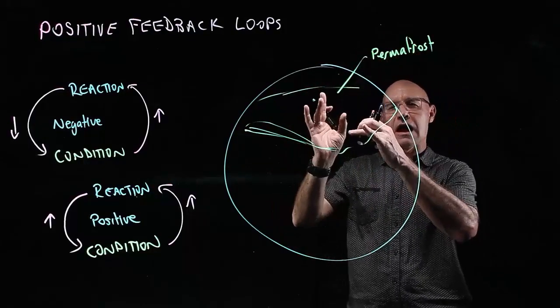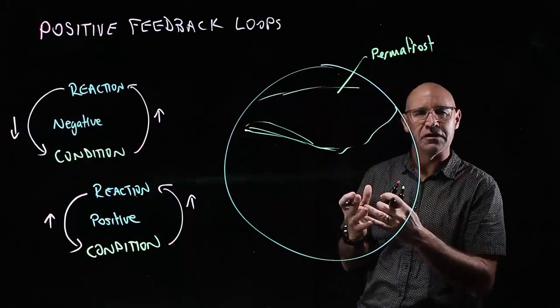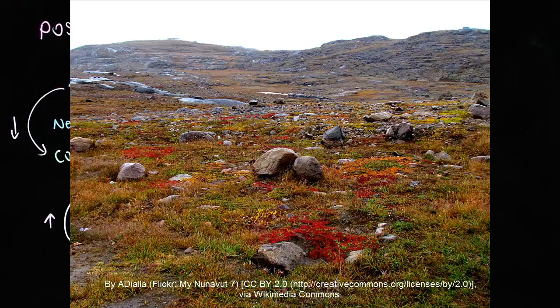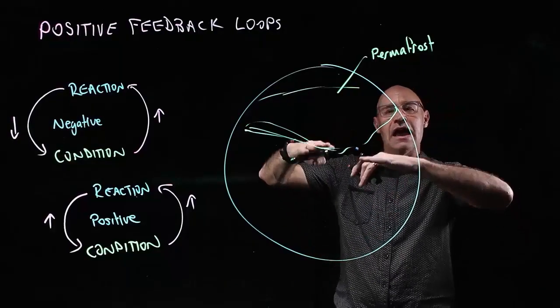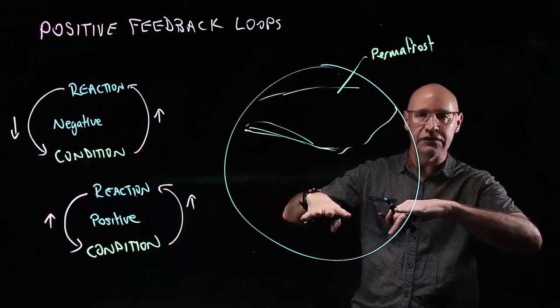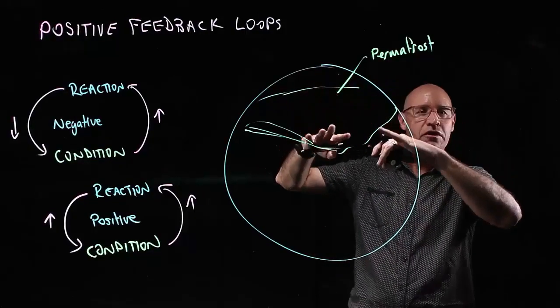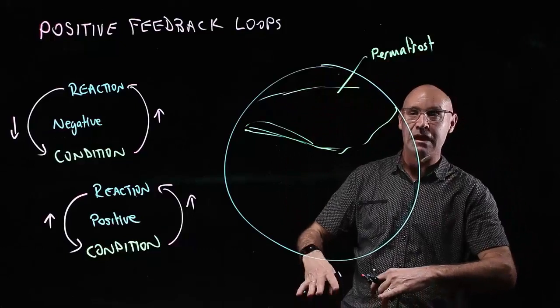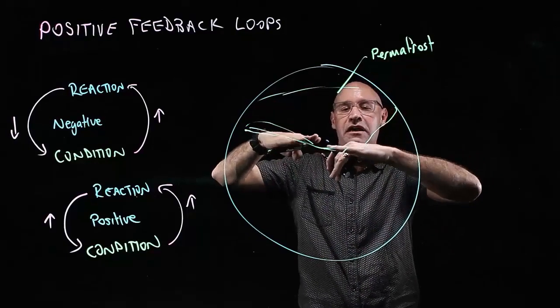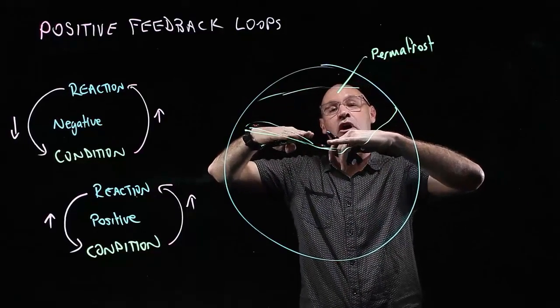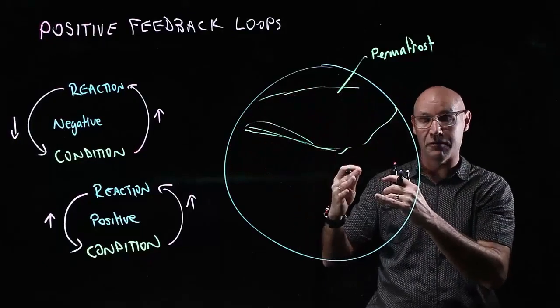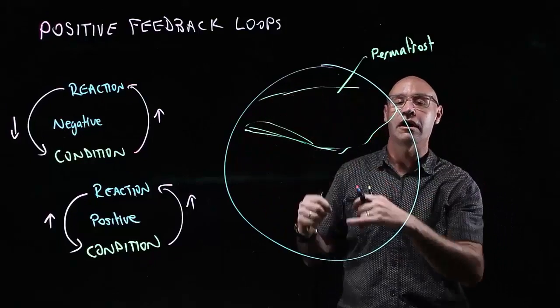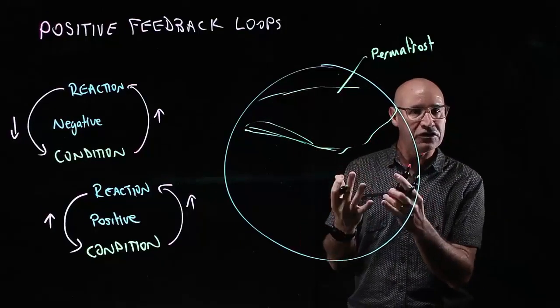Under this permafrost, there's vegetation that has been snap-frozen since the last ice age. As the global temperatures have increased, this permafrost is defrosting. The part that's still permanently frozen is moving higher and higher up. So this vegetation, these low grasses, is now being exposed for the first time in many, many years.